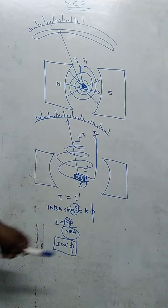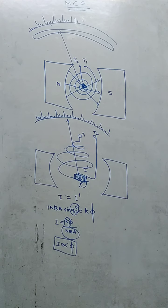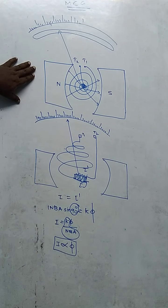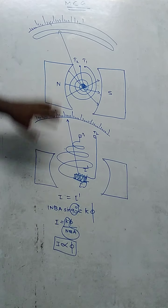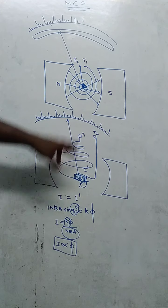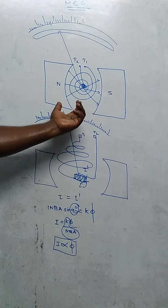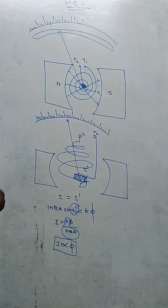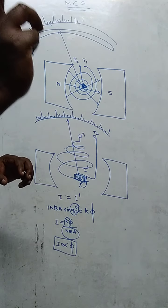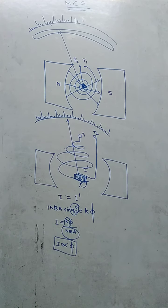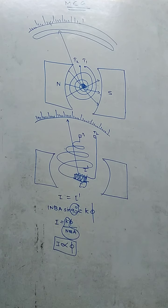This is the principle, construction, and working of a moving coil galvanometer. You can draw either diagram — the first one is preferred. This is the principle of a moving coil galvanometer. Thank you, students. I need one more class to complete the portion for magnetism.